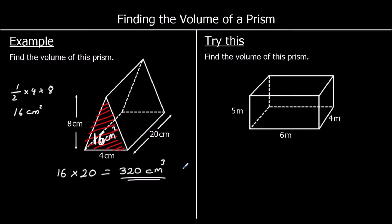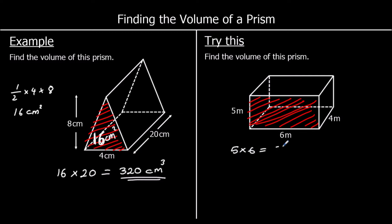There's a question for you to try — give it a go. We're going to find the area of the front shape and multiply it by how far back it goes. We've got a rectangle and 5 times 6 is 30. The area of a rectangle is length times width, and that's 30 meters squared. To find the volume we take 30 and multiply it by 4. So 30 times 4: 3 fours are 12, add the zero on the end — 120 meters cubed.